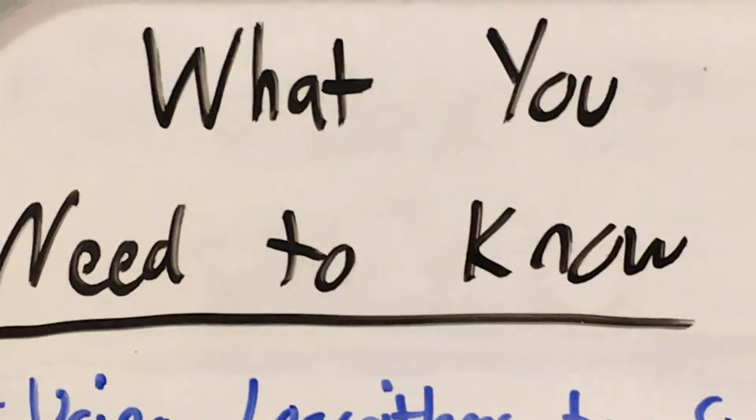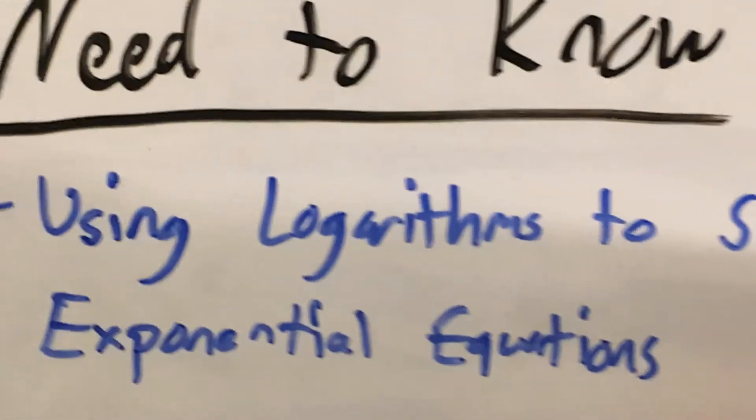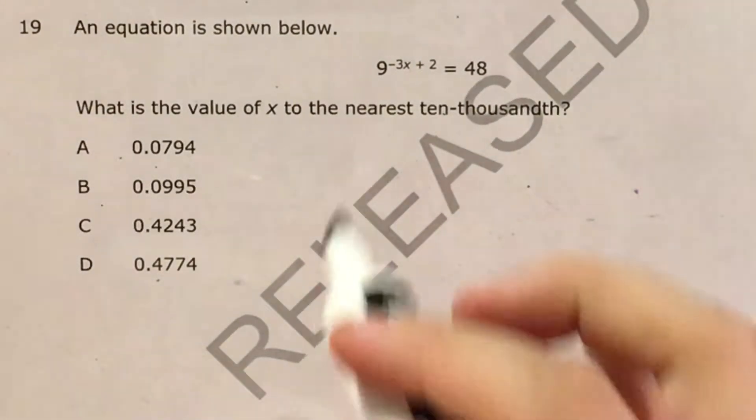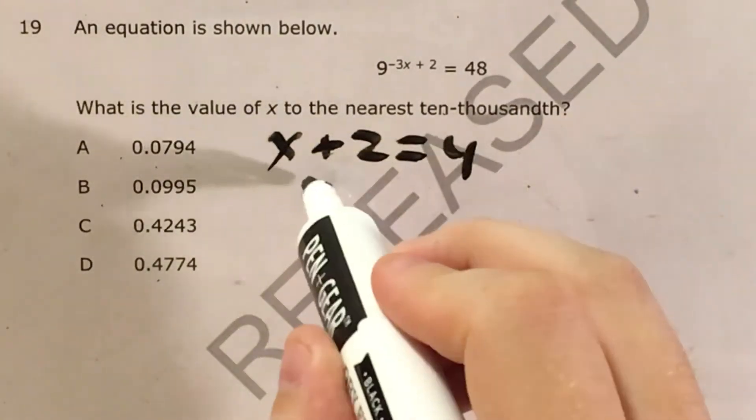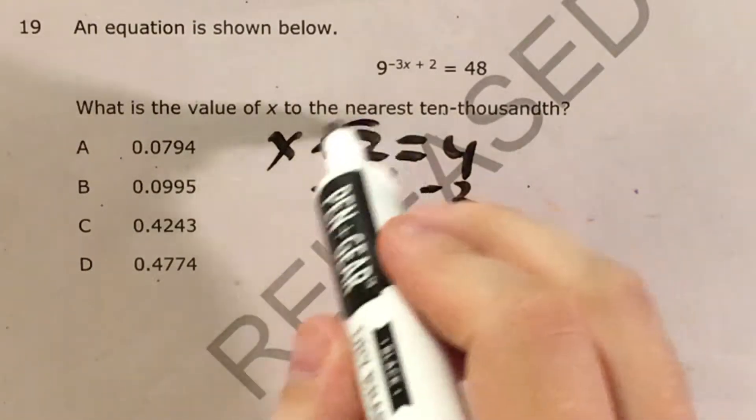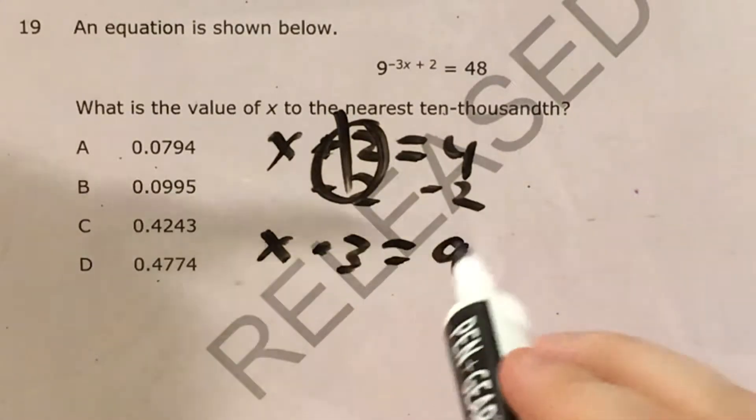Now the big skill this is testing is using logarithms to solve these exponential equations. The reason why we use logarithms is just like if I saw x plus 2 equals 4, I see that I'm adding so I subtract, that's because adding and subtracting are opposites. If I saw x times 3 equals 9, I see times so I would divide.